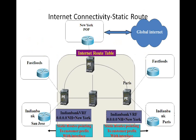Now one of the situations that we want to consider is how to provide access to the Internet for a VPN customer. As we have always been talking about a head office talking to a branch office, but what if they want to connect to the Internet. Now the picture here in the slide demonstrates how that can be achieved, wherein you can configure static routes pointing to the customer prefix with an interface on the edge routers.